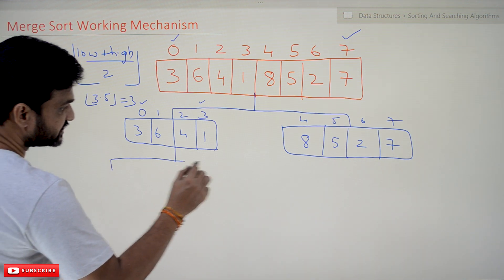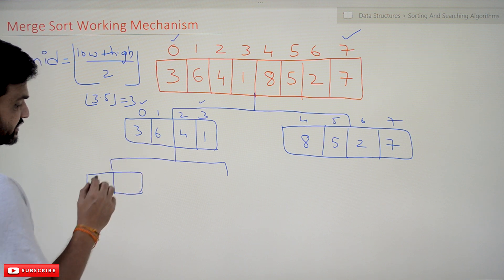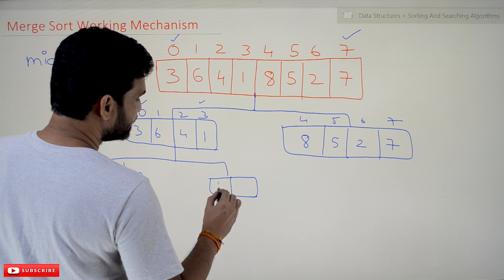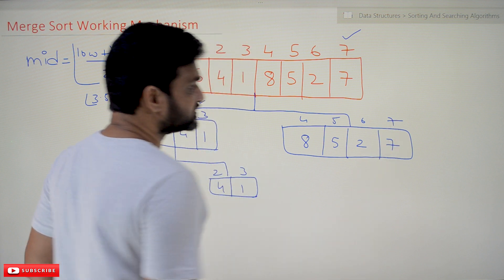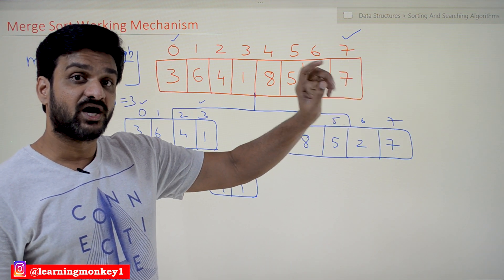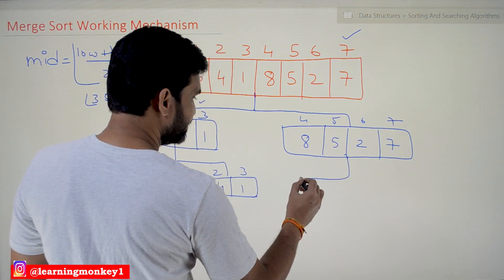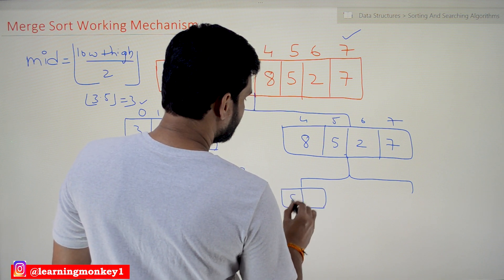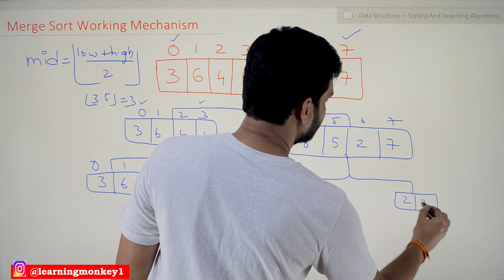After dividing at index 1, we get the sub-array at indices 0–1 and another at indices 2–3. For the right half, mid = floor((4 + 7) / 2) = floor(5.5) = 5, so the division is made at index 5. The values are 8 and 5 at indices 4–5, and 2 and 7 at indices 6–7.